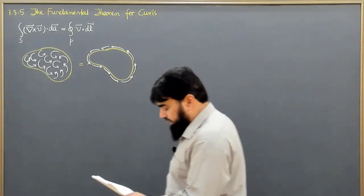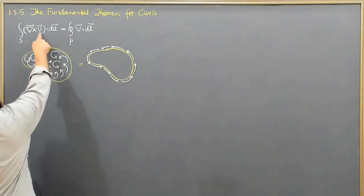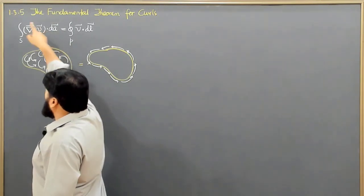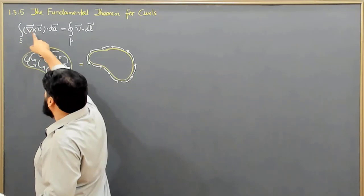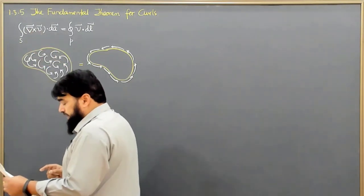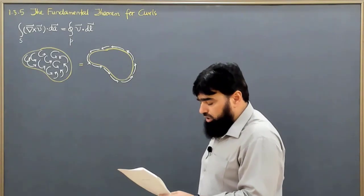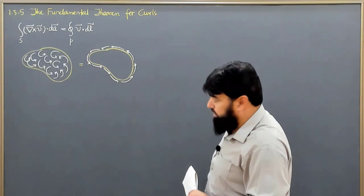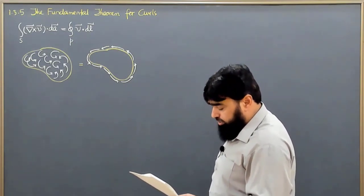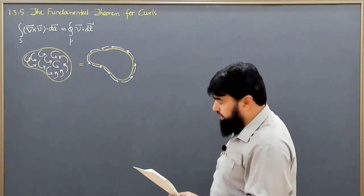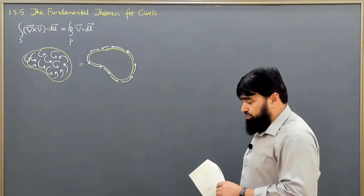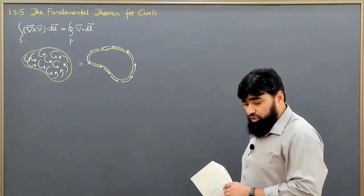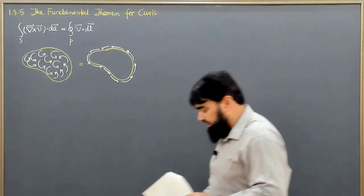The first corollary is that the integral of (del cross V) dot dA is not necessarily a closed surface. This (del cross V) dot dA depends only on the boundary line, not on the particular surface used. So it is not depending on a particular surface which we use here.